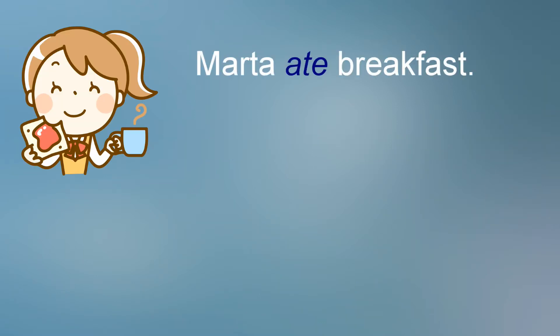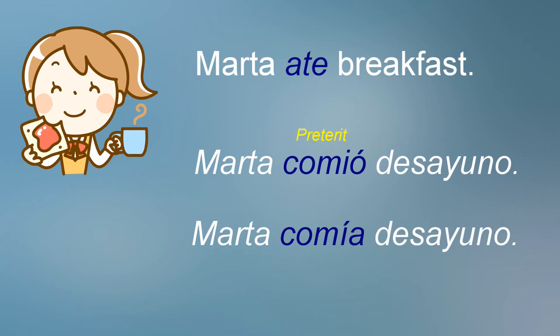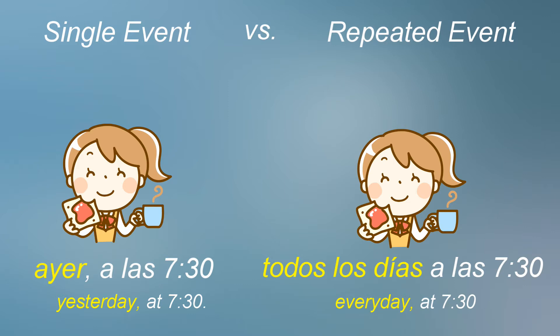Note the English expression: Marta ate breakfast. In Spanish, the translation can be either of the following: Marta comió desayuno — preterite — or Marta comía desayuno — imperfect. How is it possible to know which is correct? The answer lies not in translating the English 'Marta ate,' but rather in understanding the unspoken thought behind the verb to eat. One of the major differences is that the preterite refers to a single event.